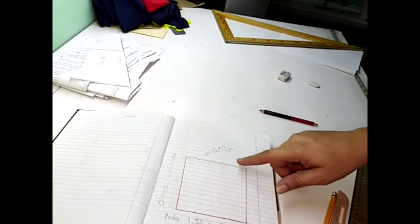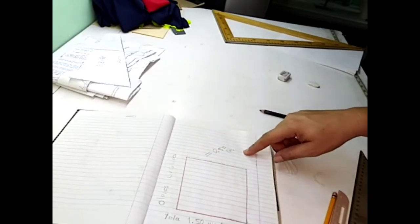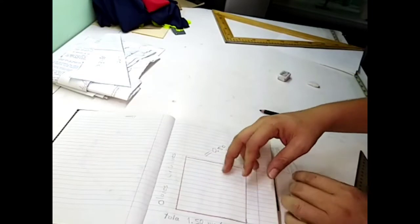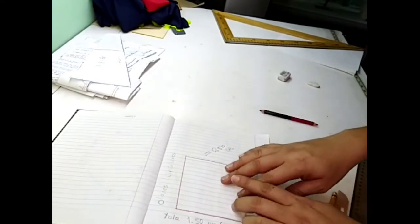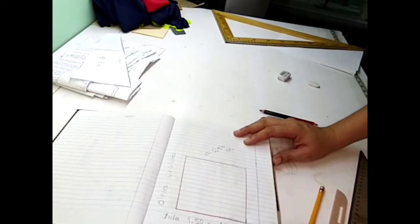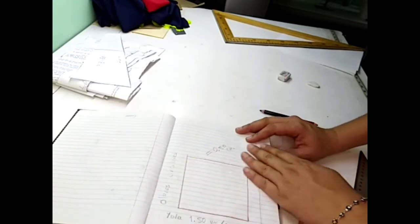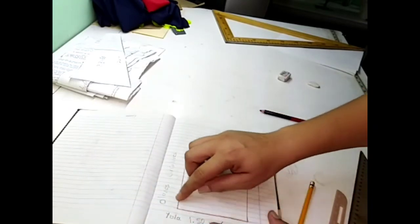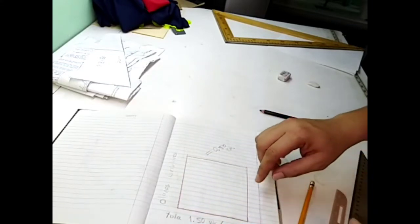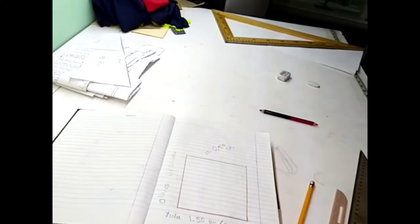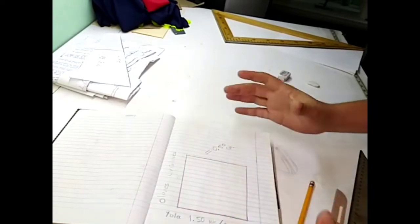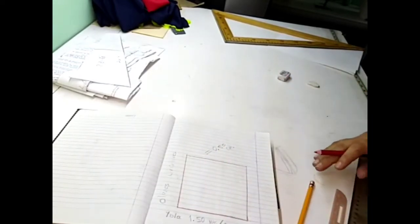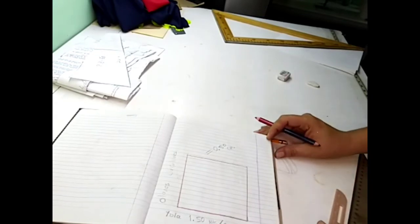Tú quisieras hacer uno que mida 65 por 65. De un solo lienzo te van a salir dos y te va a sobrar un pedazo de tela. No hay necesidad de hacer eso. Podemos hacer este cálculo y les voy a enseñar. Calcular cuántos centímetros me va a dar de redondel.